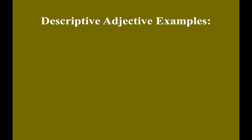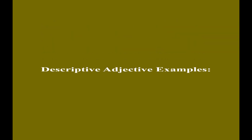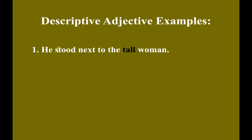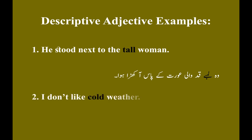Descriptive adjective examples. Example number one: He stood next to the tall woman. Bo lambe kad wali aurat ke paas khada hua. Example number two: I don't like cold weather. Mujhe sirv mausam pasand nahi hai.